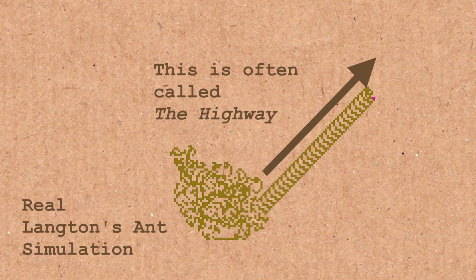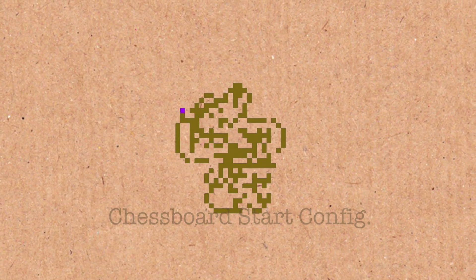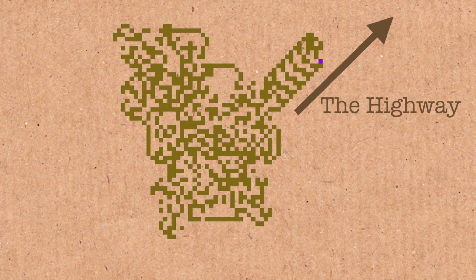It's what's called an attractor. This diagonal column he produces is something he will always end up doing. They've tried loads of different initial states, loads of different ways of setting up the board to start with, and he always eventually gets to this weird diagonal column and just carries on doing that forever. I just love that — it's like something he's drawn to do.